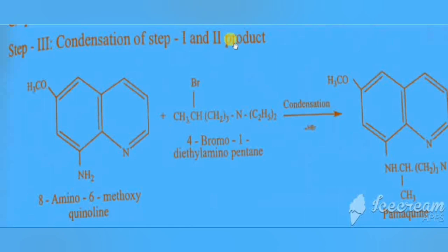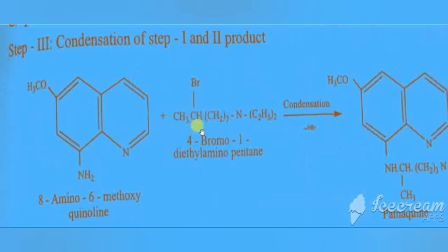Step 3 is condensation of the step 1 and step 2 products. 8-amino-6-methoxyquinoline is condensed with 4-bromo-1-diethylaminopentane. The H present in NH2 combines with Br and is removed as HBr. The remaining group — CHCH3, (CH2)3, N(C2H5)2 — is added to NH. We are getting pamaquine.